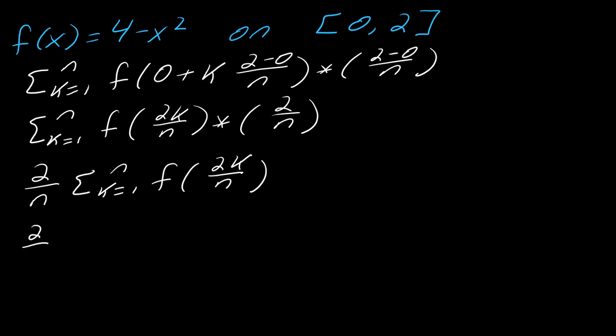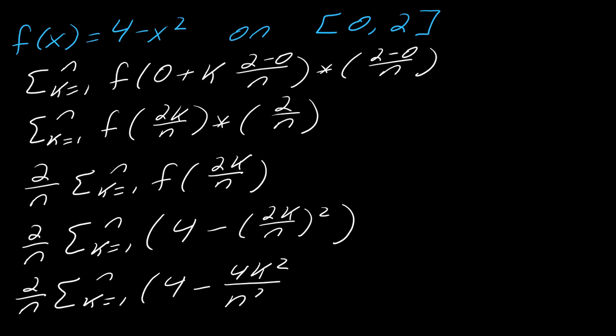So if I do this, I've got this k equals 1 to n. So this becomes 4 minus 2k over n squared. So that's what I've got. So now I want to simplify this as much as possible. So this 2 over n is still just hanging out in front here. And then I've got this 4 minus 4k squared over n squared.